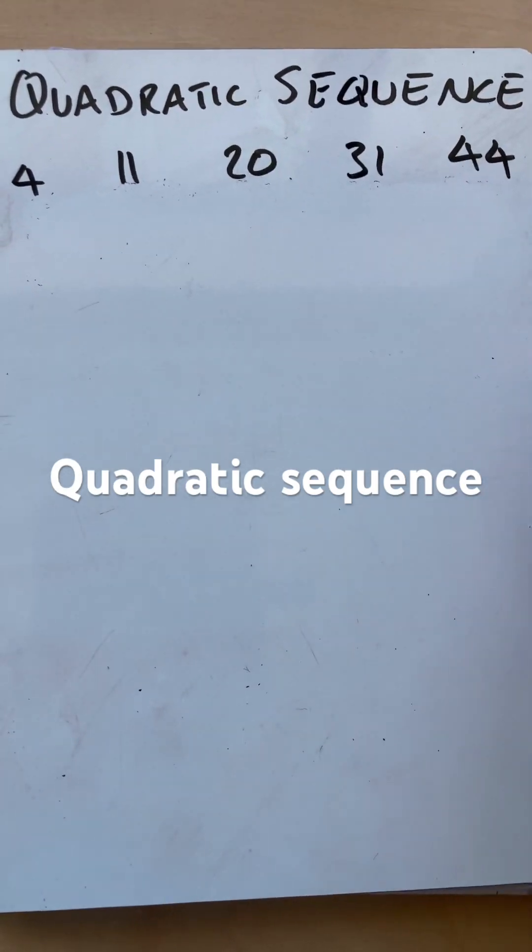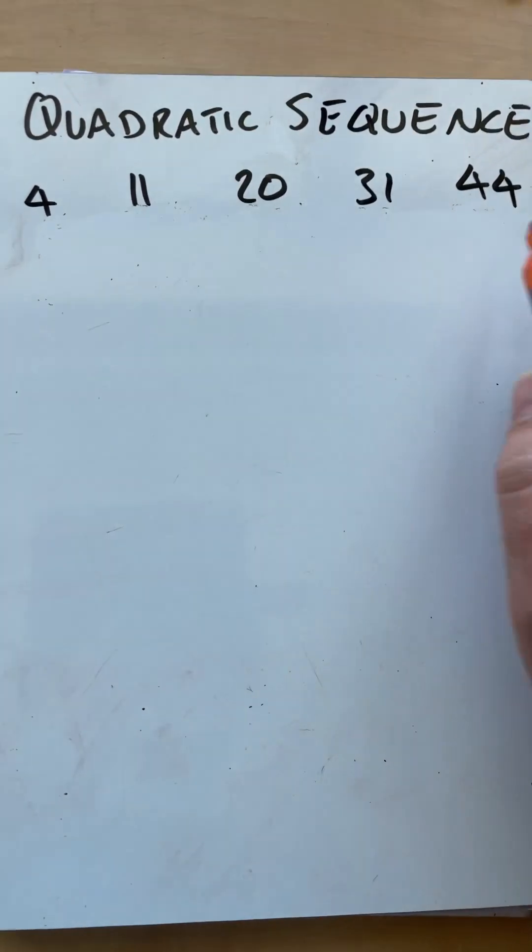Hello and welcome to Martin Maths doing quadratic sequences. We have 4, 11, 20, 31, 44.